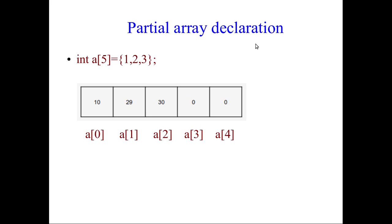Next is partial array declaration. Here I have created the length of the array as 5 but initialized with only 1, 2, 3 — three values only. The remaining 2 indexes will be 0 by default. If you are not giving any value for those positions, they will automatically take the value 0.